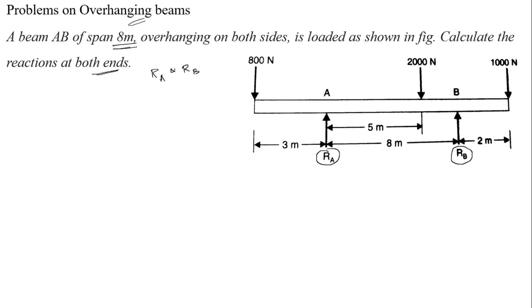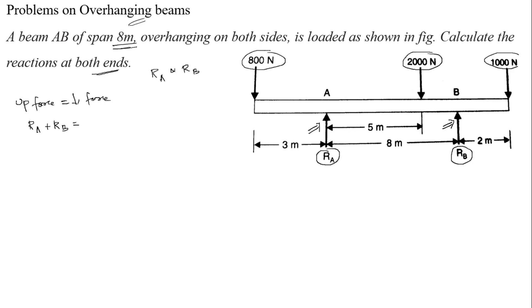First, we frame the equation: upward force equals downward force. The upward forces are RA and RB, both acting upward. The downward forces are 800, 2000, and 1000 Newton — totaling 3800 Newton. So RA plus RB equals 3800 Newton. This is equation 1.